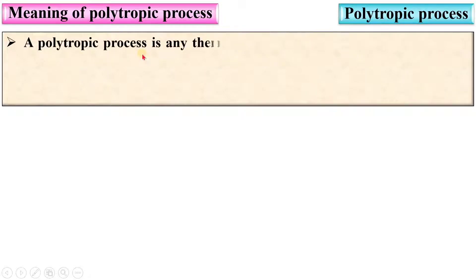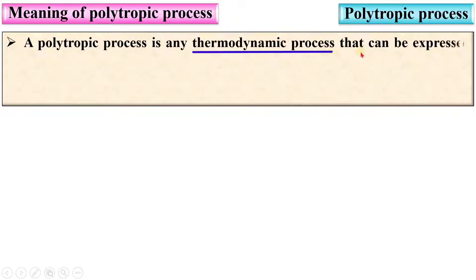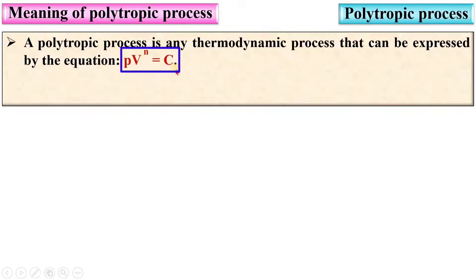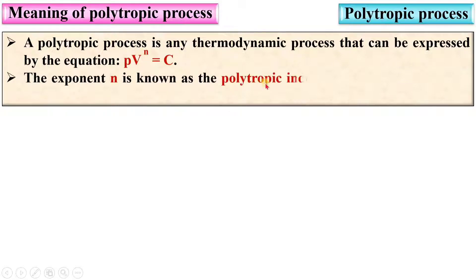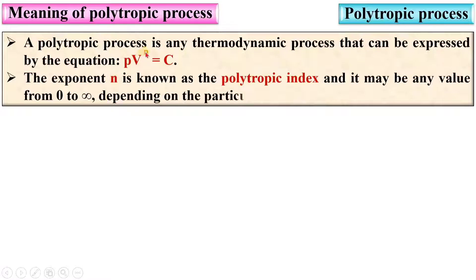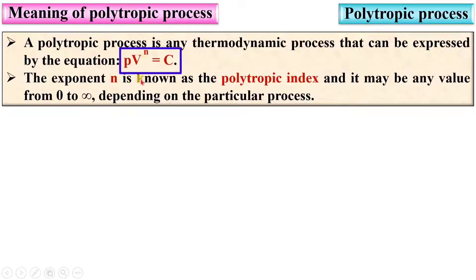First, the meaning of the polytropic process. A polytropic process is any thermodynamic process that can be expressed by the equation PV raised to n is equal to constant. This is the governing equation for the polytropic process. The exponent n is known as the polytropic index and it may be any value from 0 to infinite, depending on the particular process.